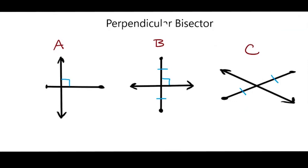For Figure A, I see that there is a right angle, so that means it's perpendicular. But in my line segment here, here are my endpoints. This line cutting through this line segment is not cutting it through the middle, so therefore it is not a bisector. This is not a perpendicular bisector, so I'll say no.